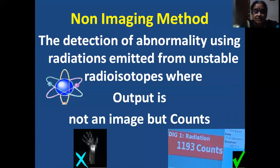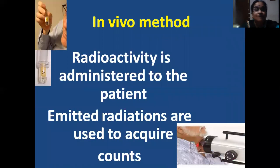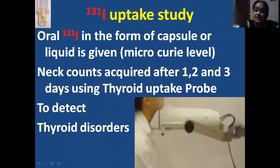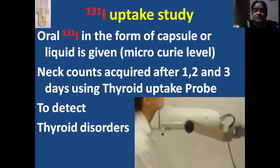Non-imaging method is the detection of abnormality using radiations emitted from unstable radioisotopes, where the output is not an image but a count for quantification. In the in vivo method, radioactivity is administered to the patient and the emitted radiations from the region of interest are used to acquire the count. The example here is I-131 thyroid uptake study — oral sodium iodide capsule or liquid at a micro-curie diagnostic level — and neck counts are acquired after one, two, and three days using the thyroid uptake probe to detect thyroid disorders.